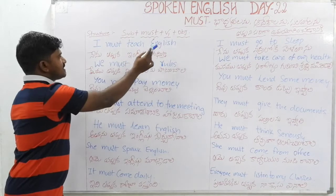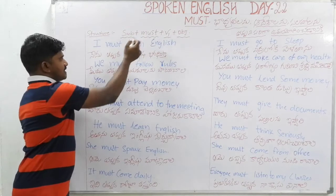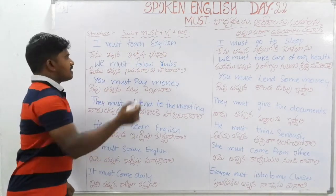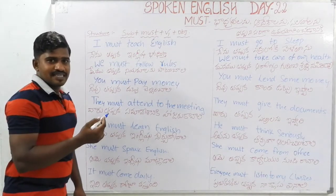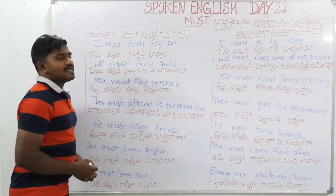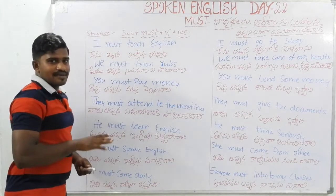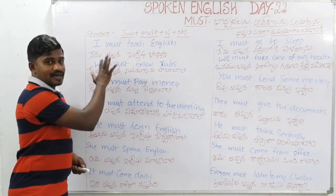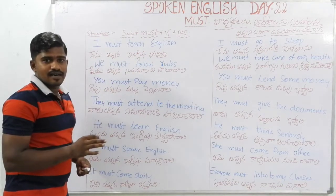I must teach English. The structure is: must + V1 form. For example, 'teach' is the V1 form. I must teach English. We use the V1 form after must. You can see it — it's very simple.